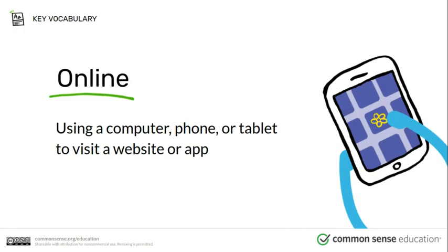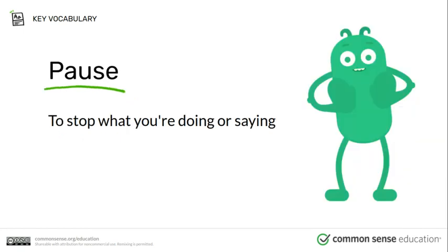So let's review our vocabulary. The first vocabulary word that we learned was online, and online means that we're using a computer, a phone, or a tablet to visit a website or an app. The second word was pause. To pause means to stop what you're doing or saying, and then think about what consequences there will be if you do or say something. You need to consider the consequences before you act.